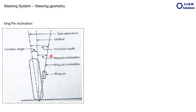The camber angle is 2 to 3 degrees, and the kingpin inclination is 6 to 14 degrees depending upon the vehicle design. The total angle between the straight line of the tyre and the axis of the kingpin or swivel joint — whatever angle is there between these two lines — is called the included angle.